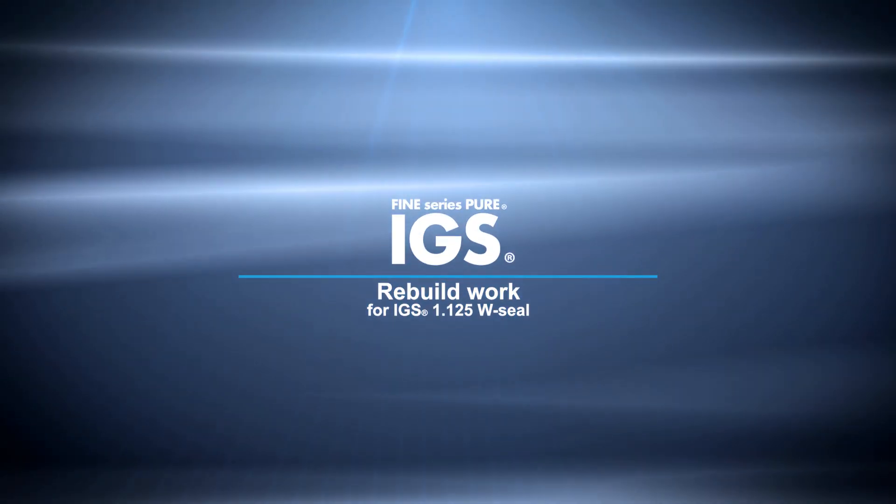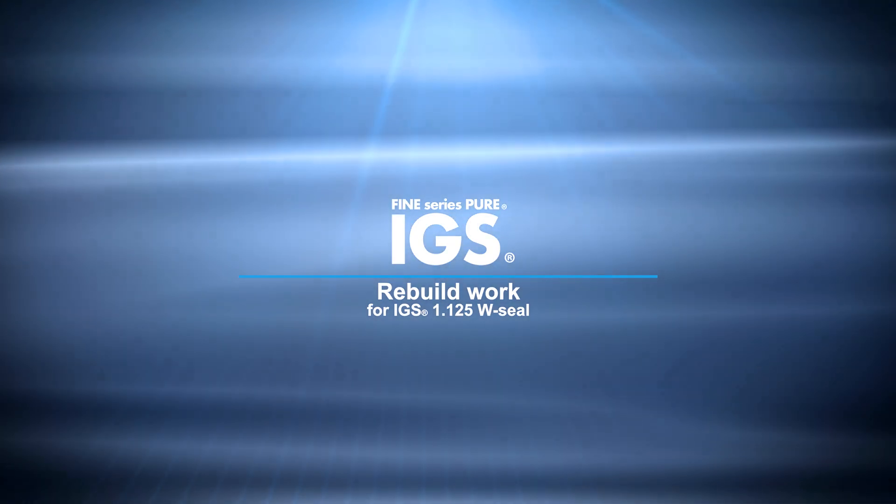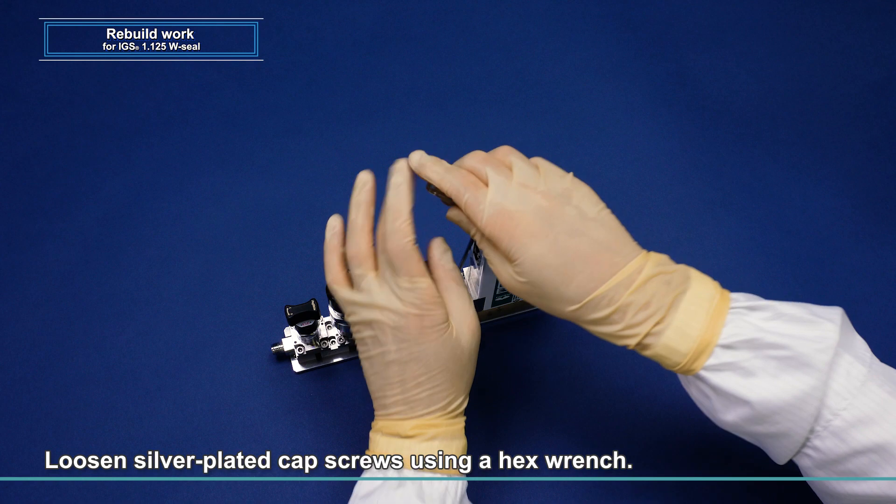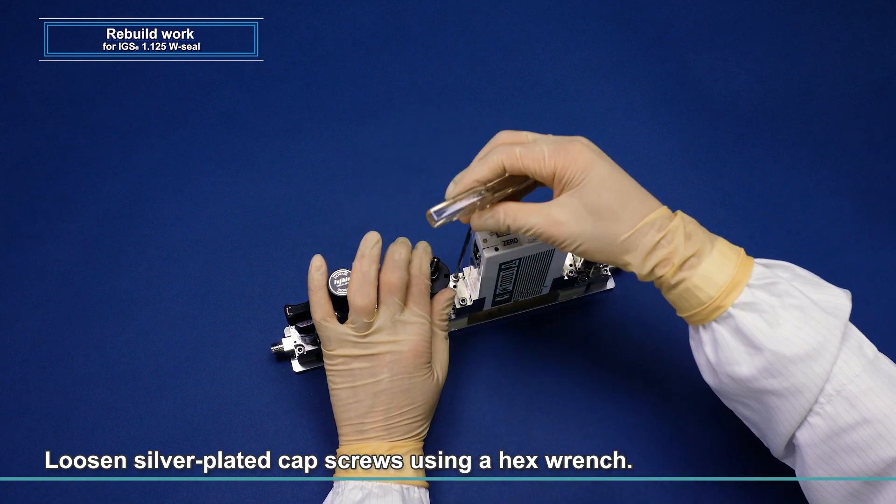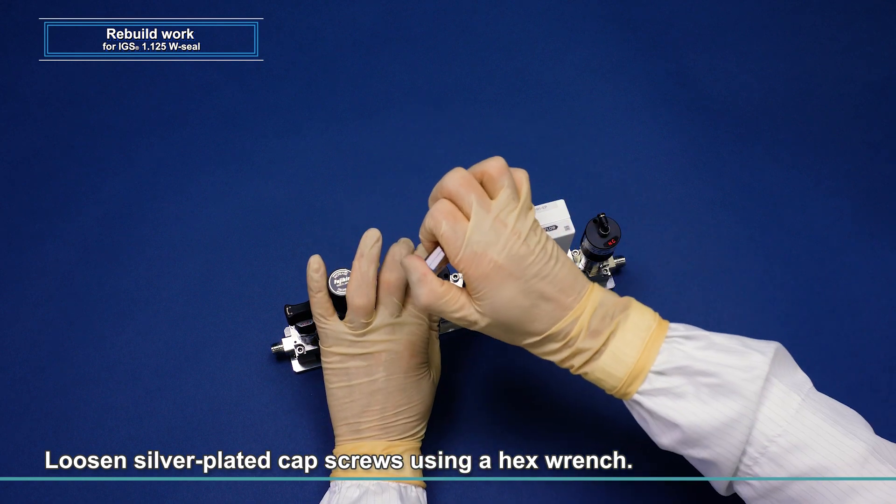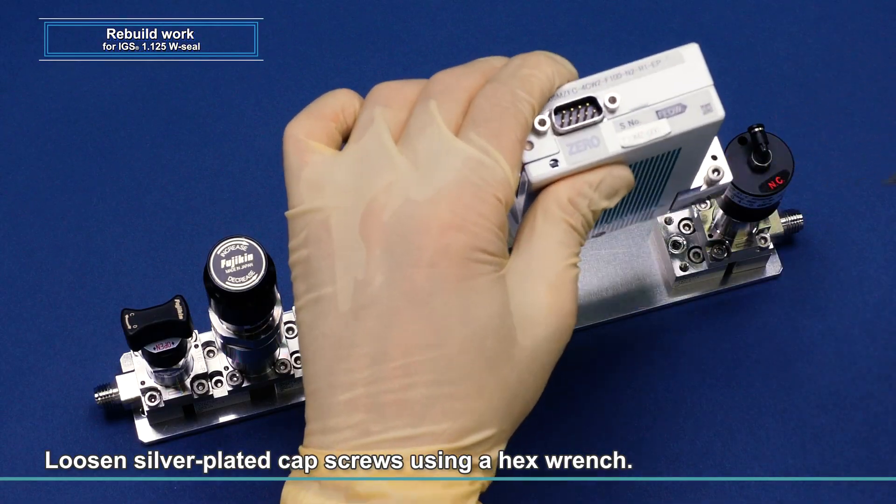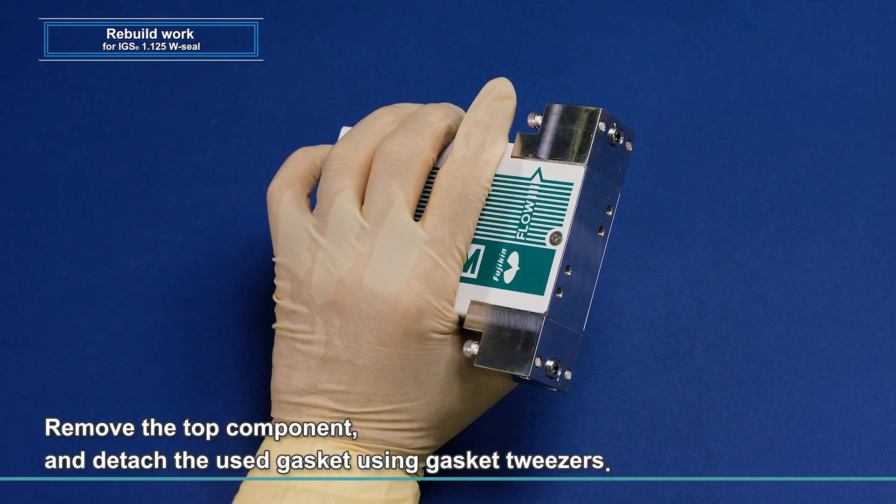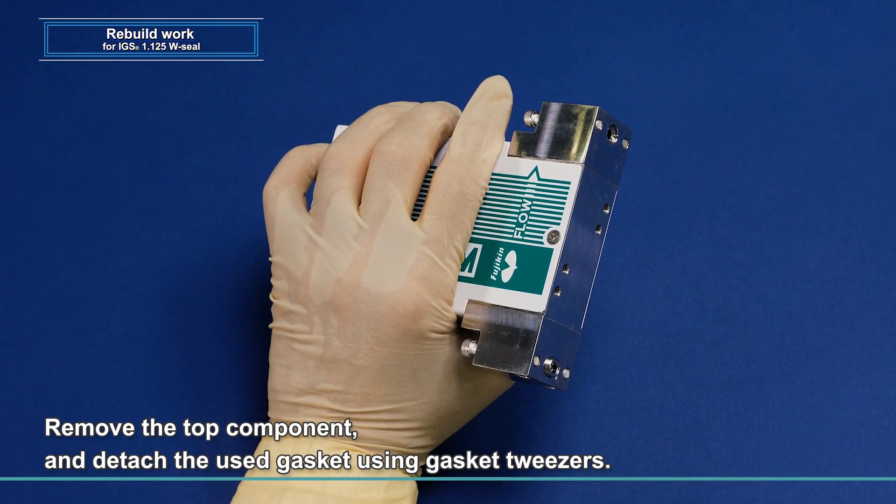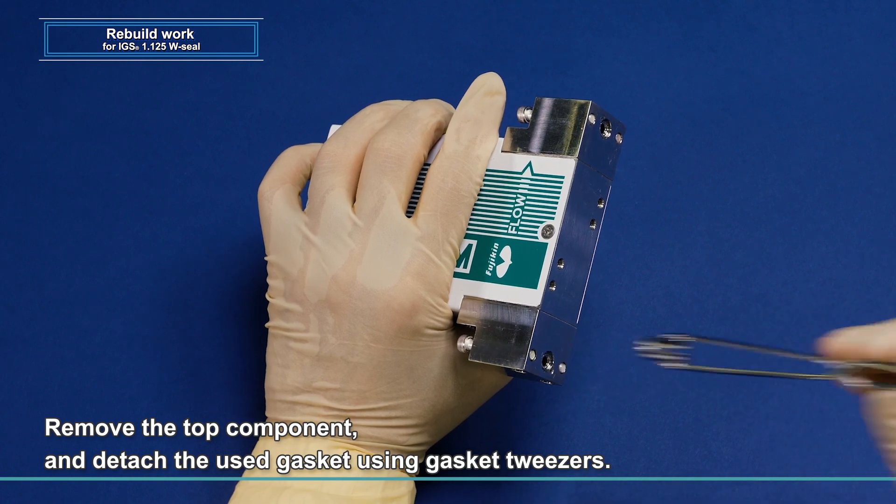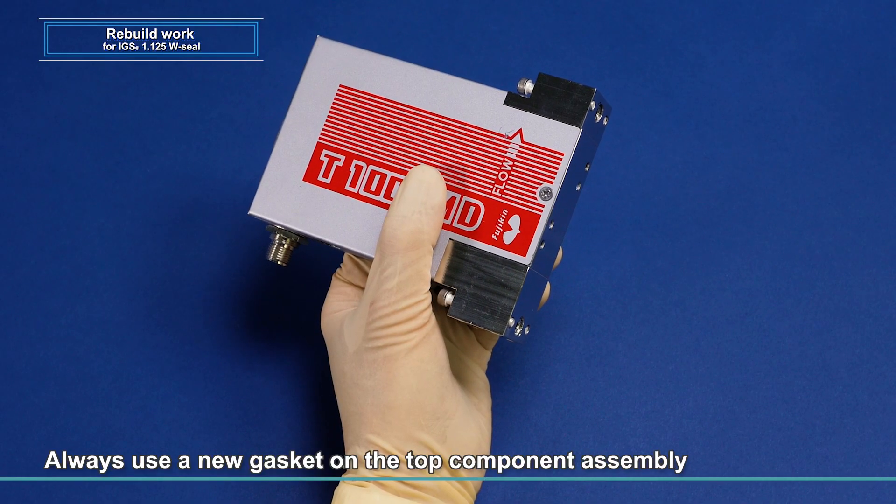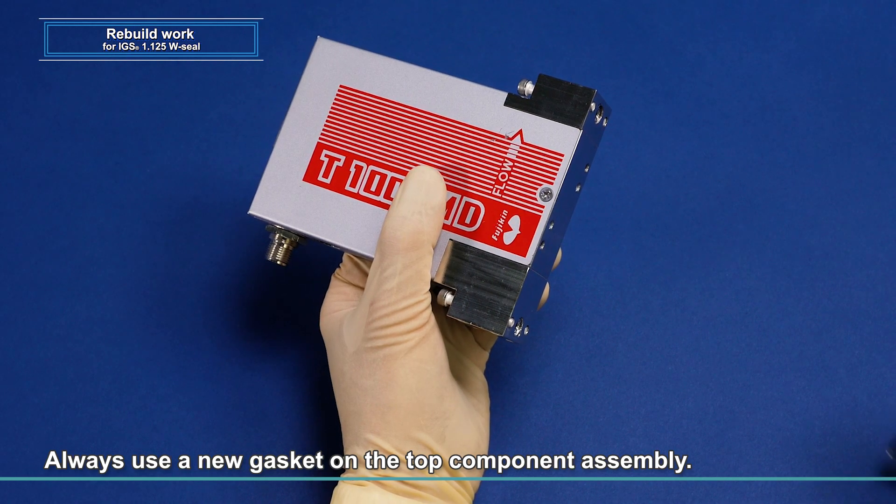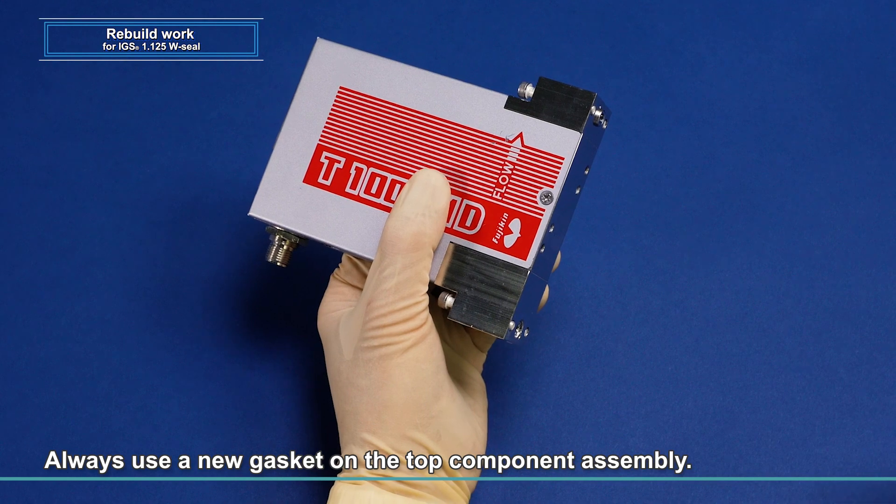Rebuild work for IGS 1.125W seal: Using a hex wrench, loosen the silver plated cap screws located on the left side of the top component. When removing the fasteners, take care not to have the top component fall. Remove the top component and detach the used gaskets using gasket tweezers. Be sure to use a brand new gasket for the top component to be newly assembled. Do not reuse used gaskets to avoid possible leaks.